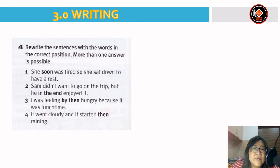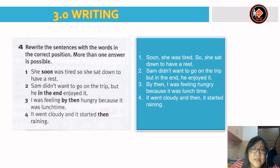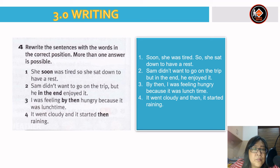Now rewrite the sentences with the words in the correct position — more than one answer is possible. Number 1: 'She soon was tired, so she sat down to have a rest.' → 'Soon she was tired, so she sat down to have a rest.' Number 2: 'Sam didn't want to go on the trip, but he in the end enjoyed it.' → 'Sam didn't want to go on the trip, but in the end he enjoyed it.' Number 3: 'I was feeling by then hungry because it was lunchtime.' → 'By then I was feeling hungry because it was lunchtime.' Number 4: 'It went cloudy and it started then raining.' → 'It went cloudy and then it started raining.'